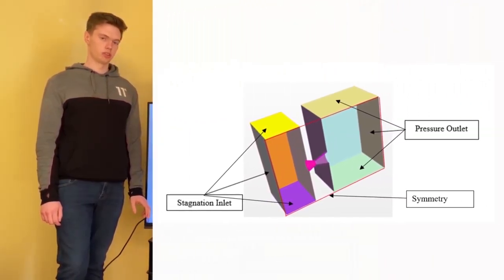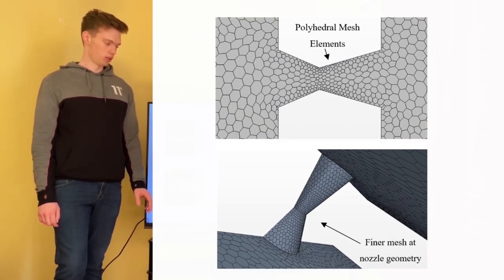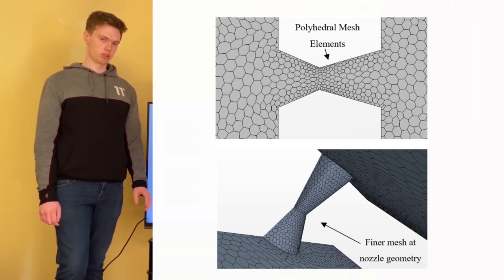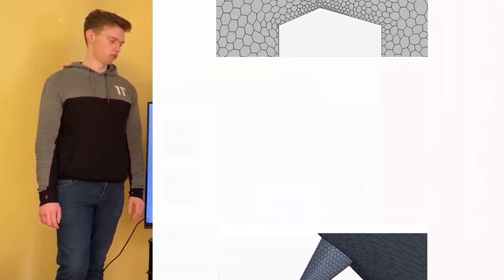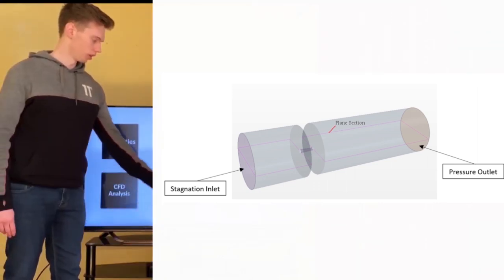It's easier in simulation running with air than it is with steam. So when the simulation was running as we expected, we could apply the same methodology to the steam simulations. For each of the three nozzles, we used a stagnation inlet, a pressure outlet and a symmetry plane.